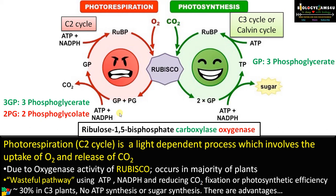To recycle this 2-phosphoglycolate, it must travel through 3 organelles, wasting ATP and NADPH without the production of glucose or sugar. This results in wastage of energy, considered a wasteful pathway using ATP, NADPH, and carbon dioxide, thereby reducing photosynthetic efficiency by 30% in C3 plants.